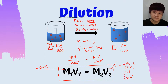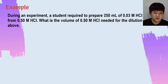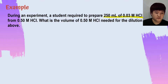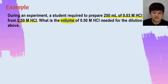In this example, a student is required to prepare 250 millilitres of 0.03 molar hydrochloric acid from a 0.5 molar hydrochloric acid. The question asks for the volume of 0.5 molar hydrochloric acid needed for this dilution.